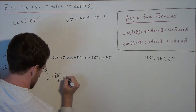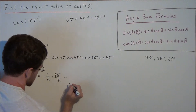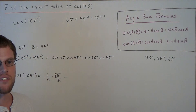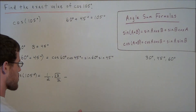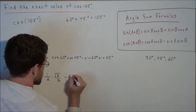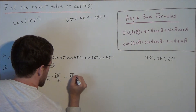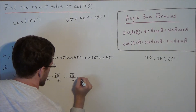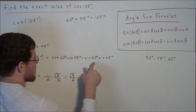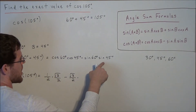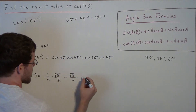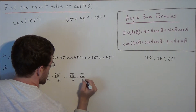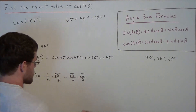Now we're subtracting the sine of 60. Sine of 60 is equal to radical 3 over 2, and we're multiplying by sine of 45, which is also equal to the square root of 2 over 2.